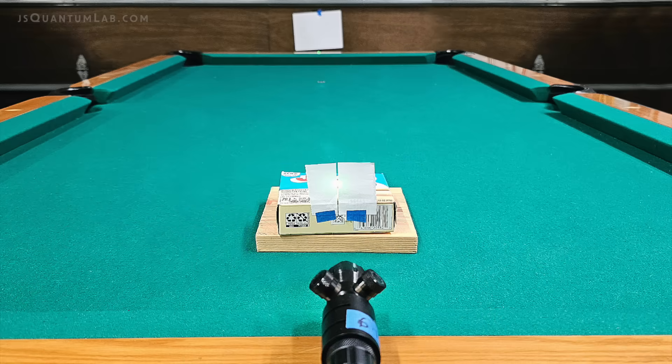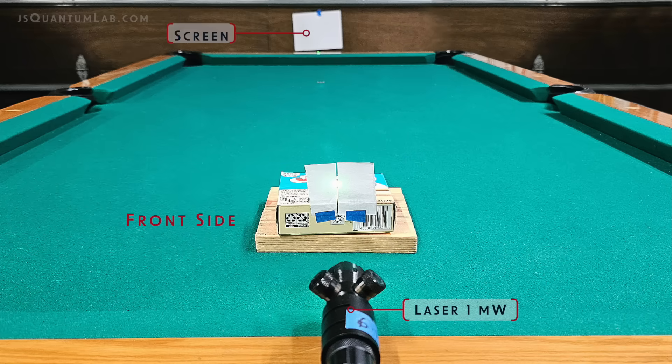Anyone with a cheap low-power laser and two small pieces of paper can prove Veritasium is wrong. The setup is simple by design. Anyone can do this experiment.